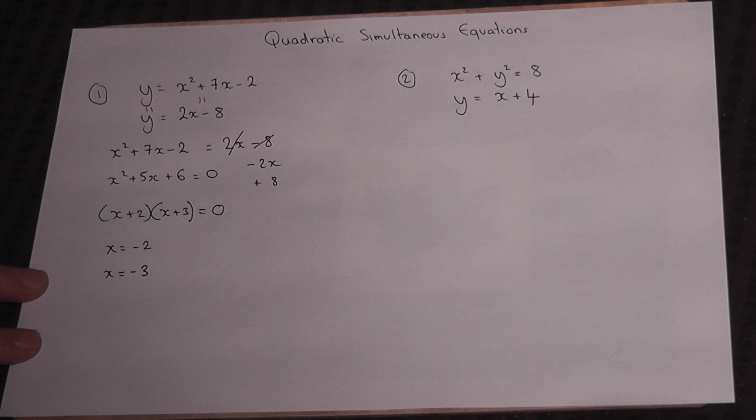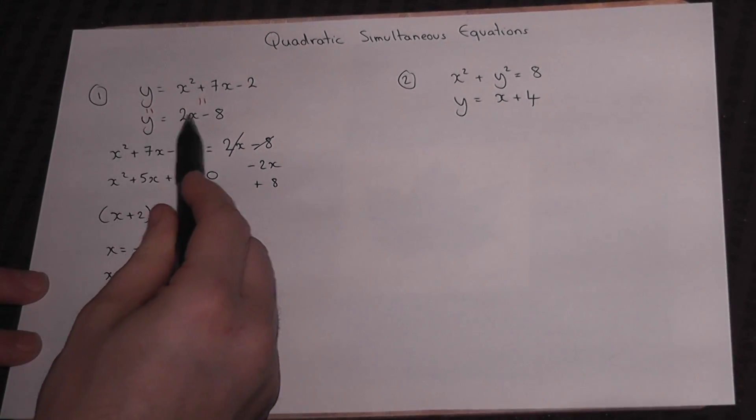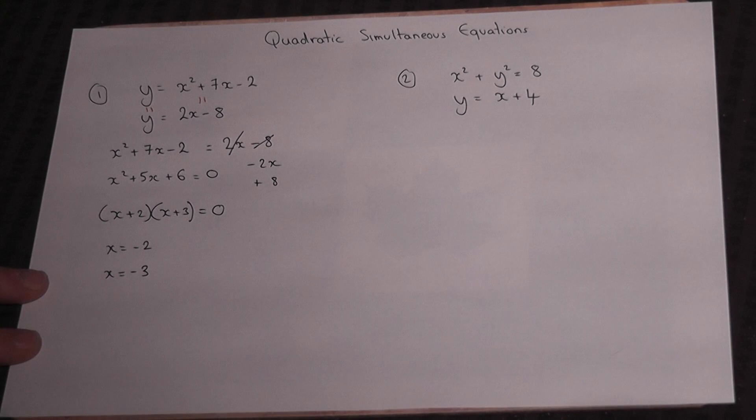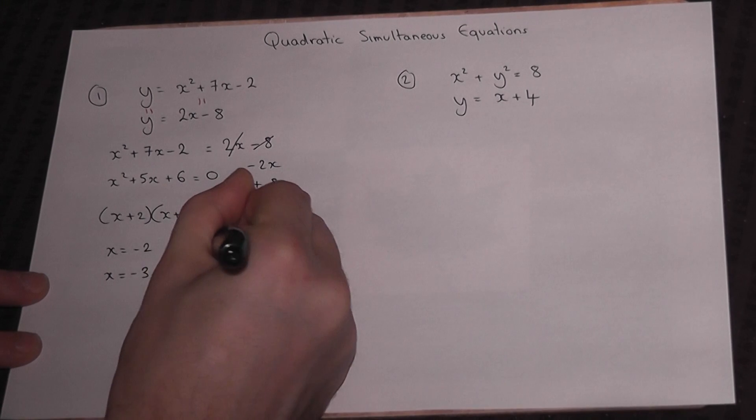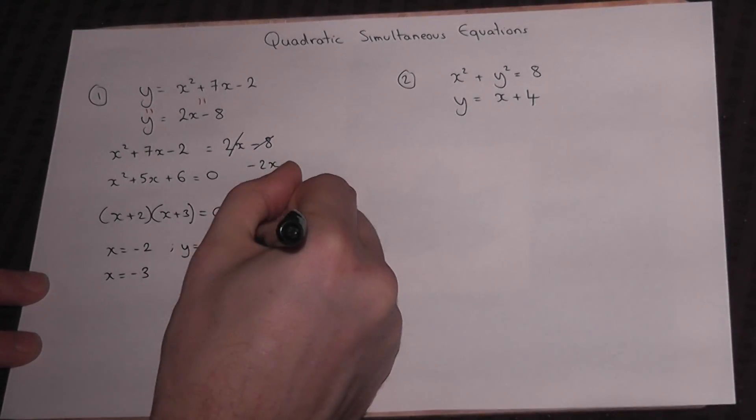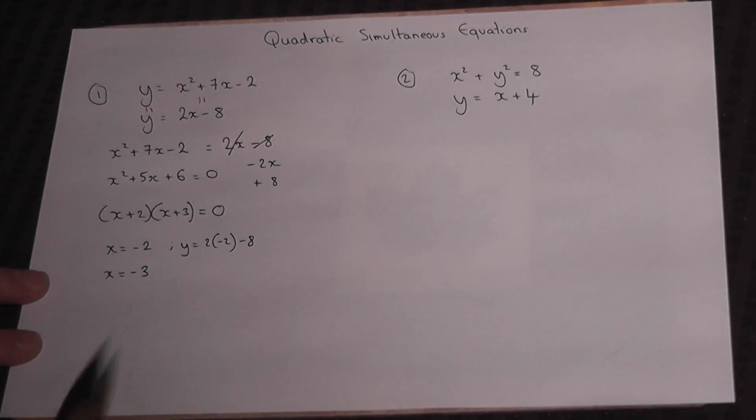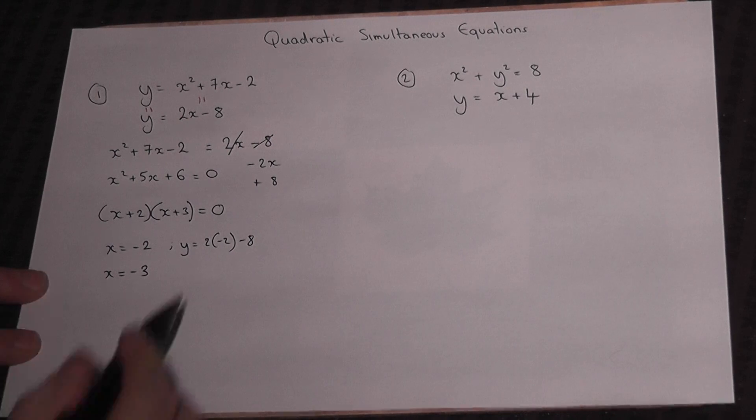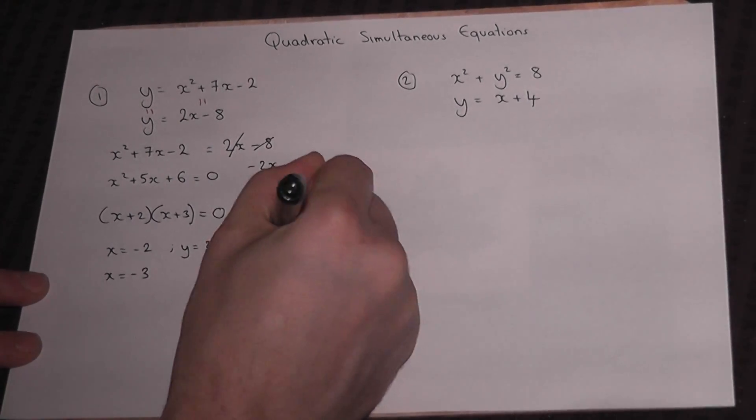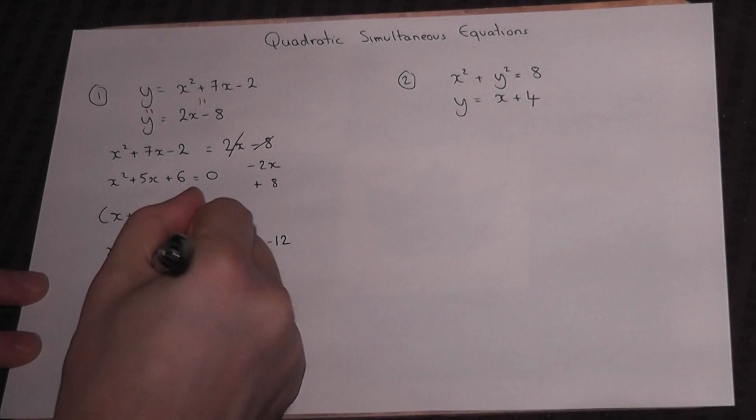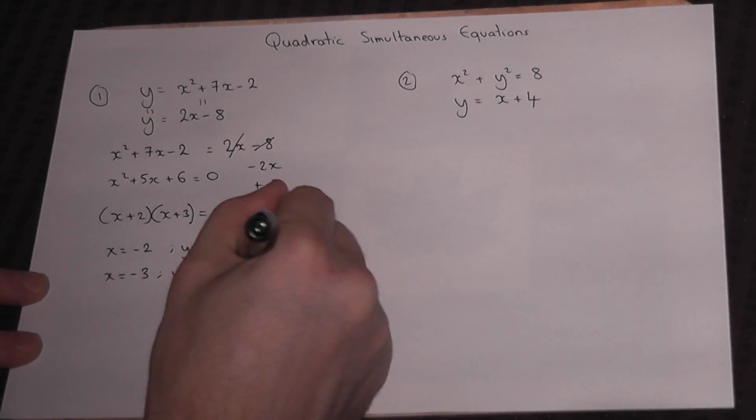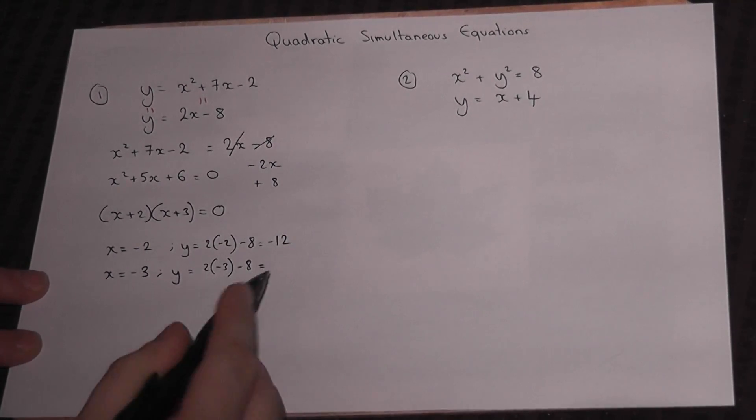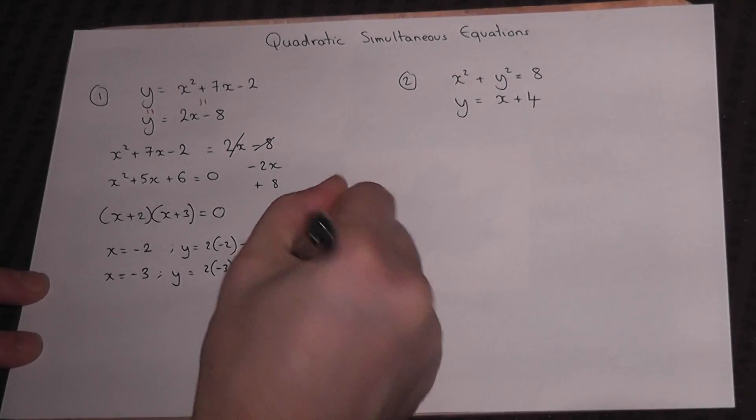Now we're almost finished, but there's a Y value as well. We know y = 2x - 8. So if x is minus 2, y equals 2 times minus 2 minus 8, which is minus 4 minus 8, which equals minus 12. Or y is 2 times minus 3 minus 8, which is minus 6 minus 8, which is minus 14.